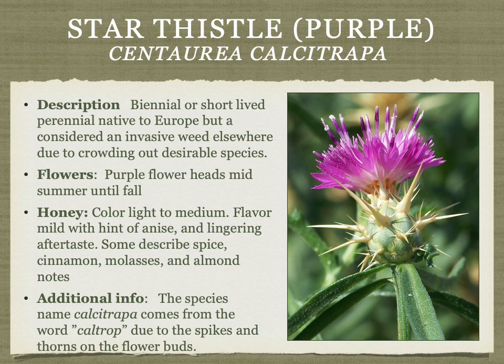Star thistle comes in two types. Purple star thistle is produced more in the eastern US and upper Midwest — the honey is light to medium in color with a mild flavor, hint of anise, and lingering aftertaste, sometimes with spice, cinnamon, molasses, and almond notes. The species name Calcitrapa comes from 'caltrop,' as the flower bud has spikes resembling a caltrop.